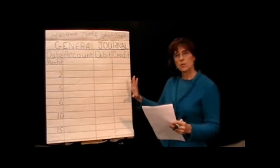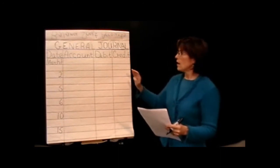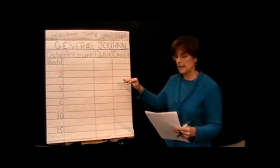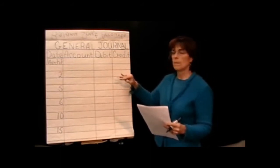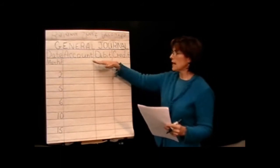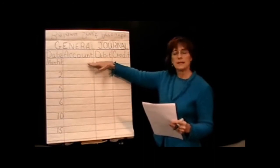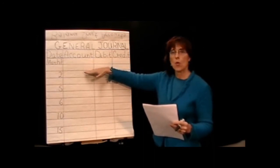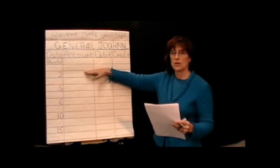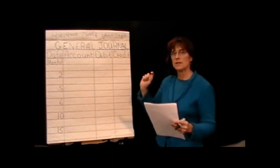Okay, some other things to remember when you're using the general journal is that each transaction is going to take up at least two lines because you're going to have at least one debit and at least one credit for every transaction. And if you remember, debits must equal credits.